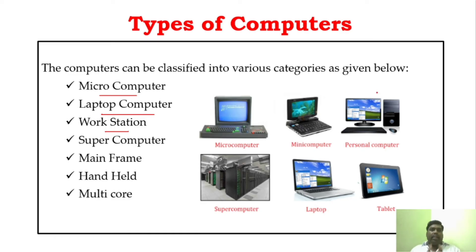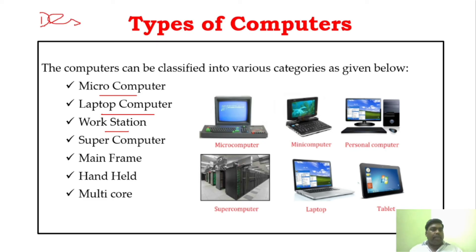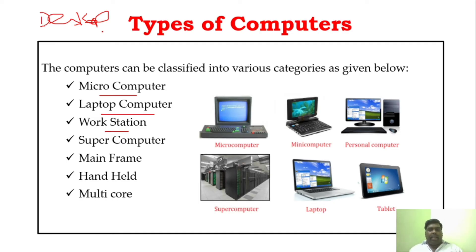Very importantly, the first classification is the personal computer. A personal computer is a normal desktop computer which we normally use in our homes. You can have a keyboard, mouse, a CPU, and if you need, you can use a printer, speakers, and all those things. That is the personal computer.